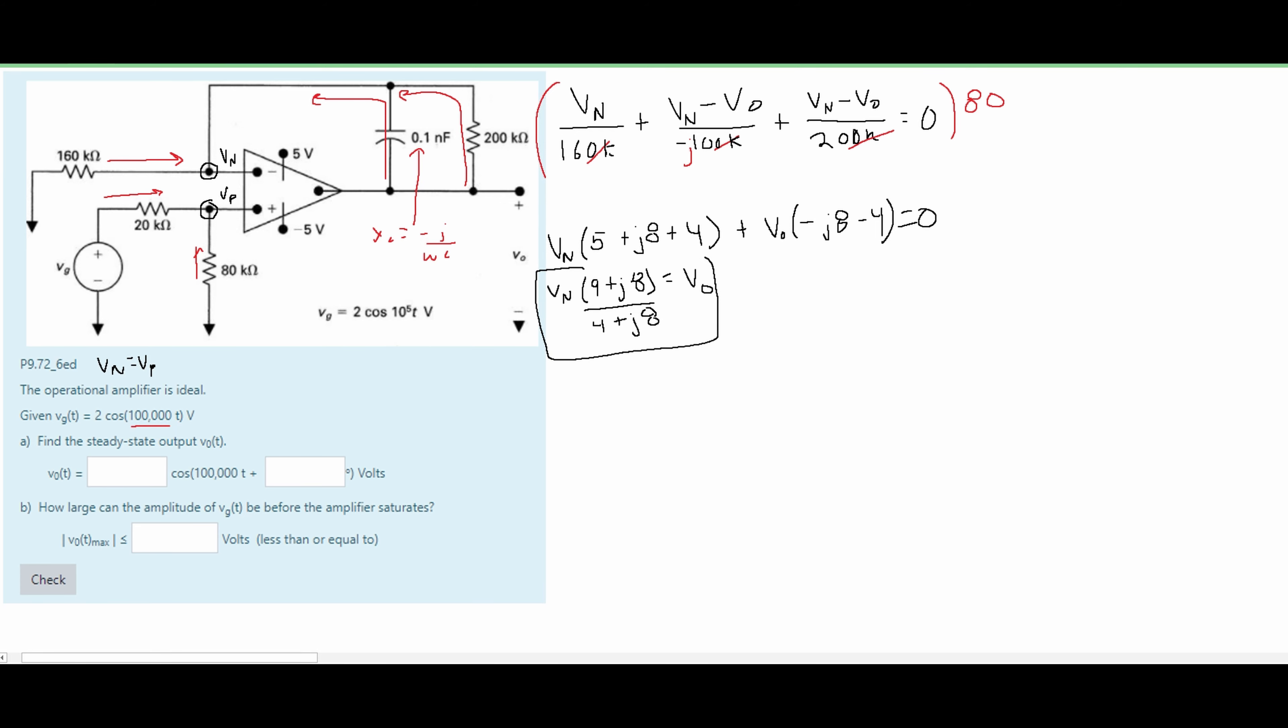Now we want to find our VN. So we are going to use this part of our circuit. We know that our VG is going to be 2 with an angle of 0 degrees. So since our VP is equal to our VN we are going to write our VN minus our VG, so 2, divided by the 20 kiloohm resistor because that's what it's over plus our VN over the 80 kiloohm resistor.